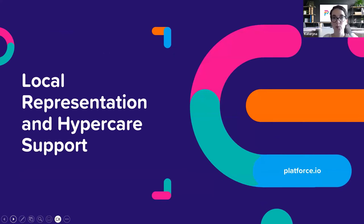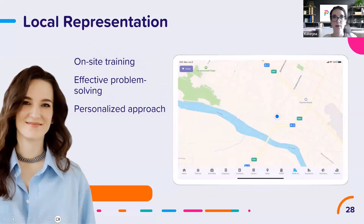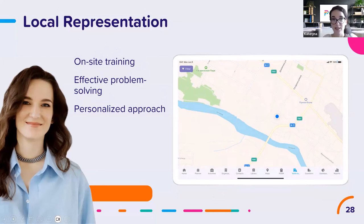Transitioning to a new CRM can be a complex and challenging process, especially when a company operates across multiple regions and countries. Understanding the importance of local representation and hyper-care support is key in smoothing out this process. Your CRM system needs to communicate effectively with all your team members, and this communication becomes remarkably easier when there is a local CRM representative who speaks your team's language fluently. First, you can request on-site training. With a local CRM representative, training can be conducted in the native language of your team, ensuring no information gets lost in translation. They understand the regional nuances and can explain the system's intricacies in the context that your team understands best, making the training more effective.